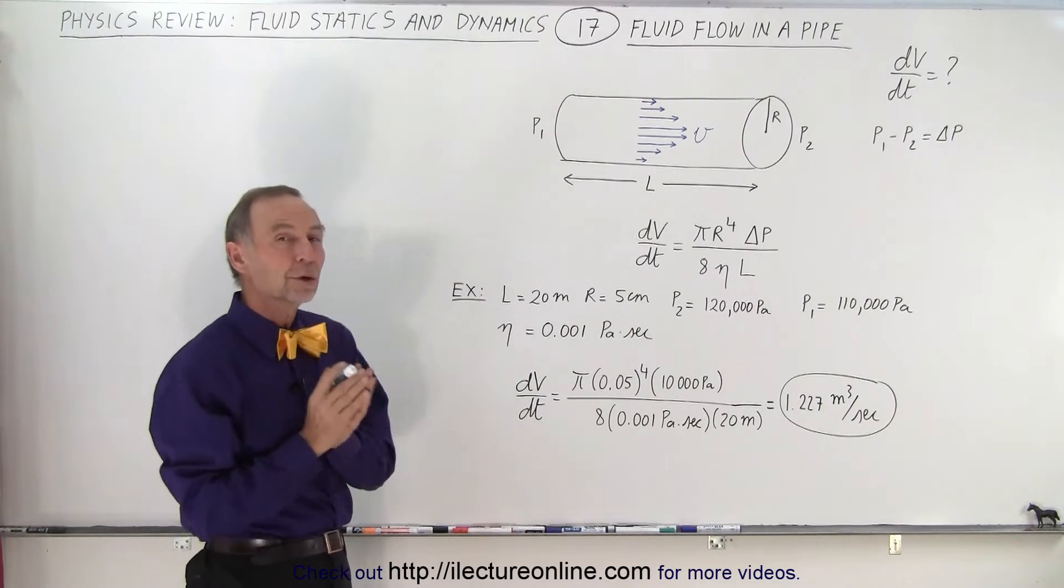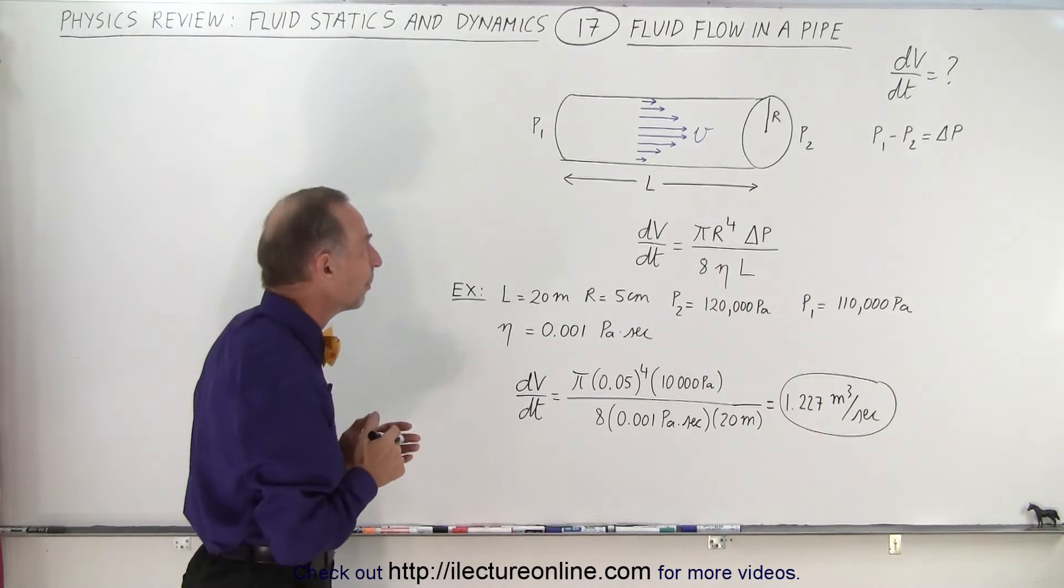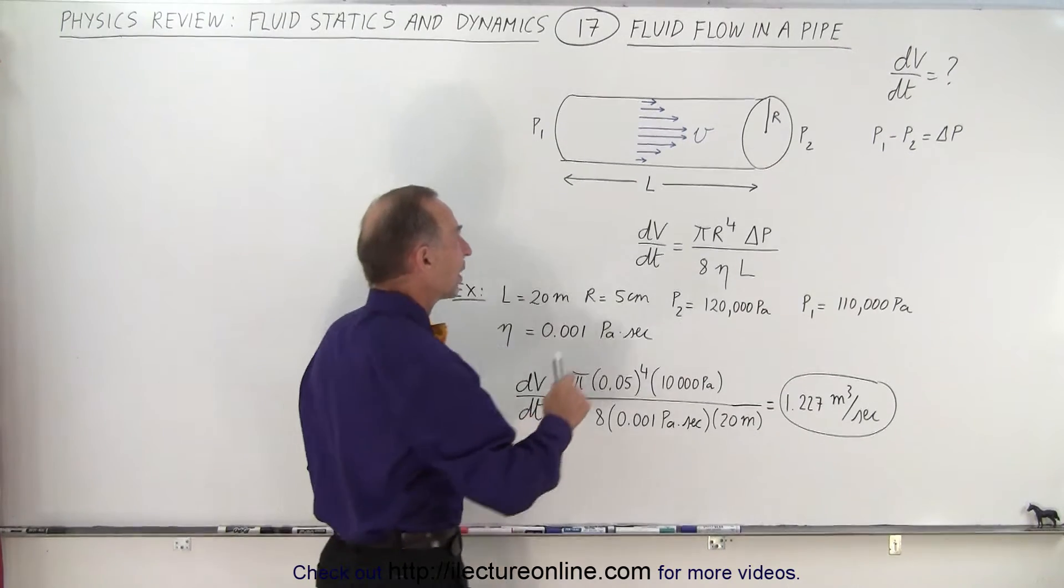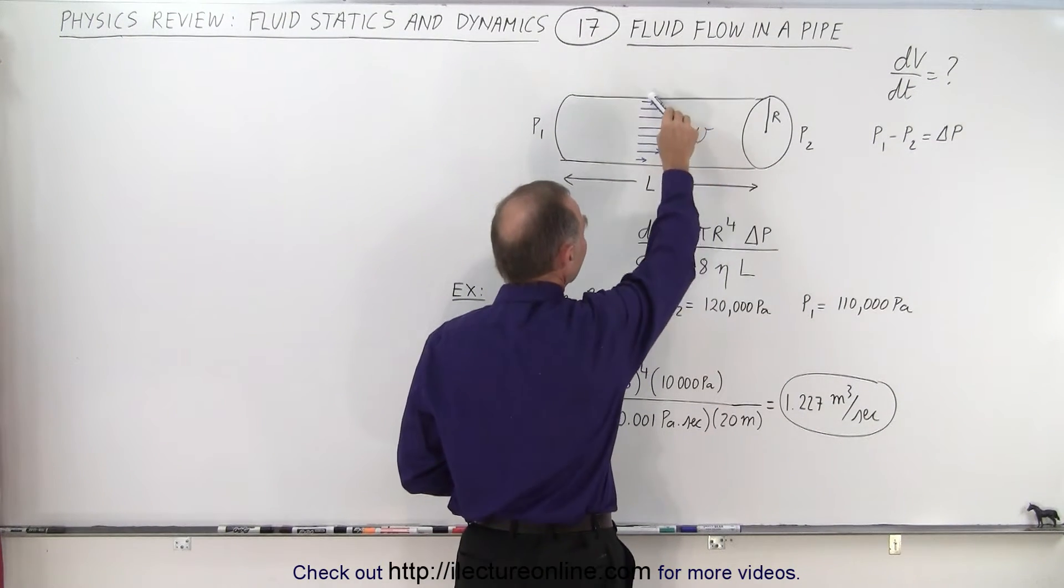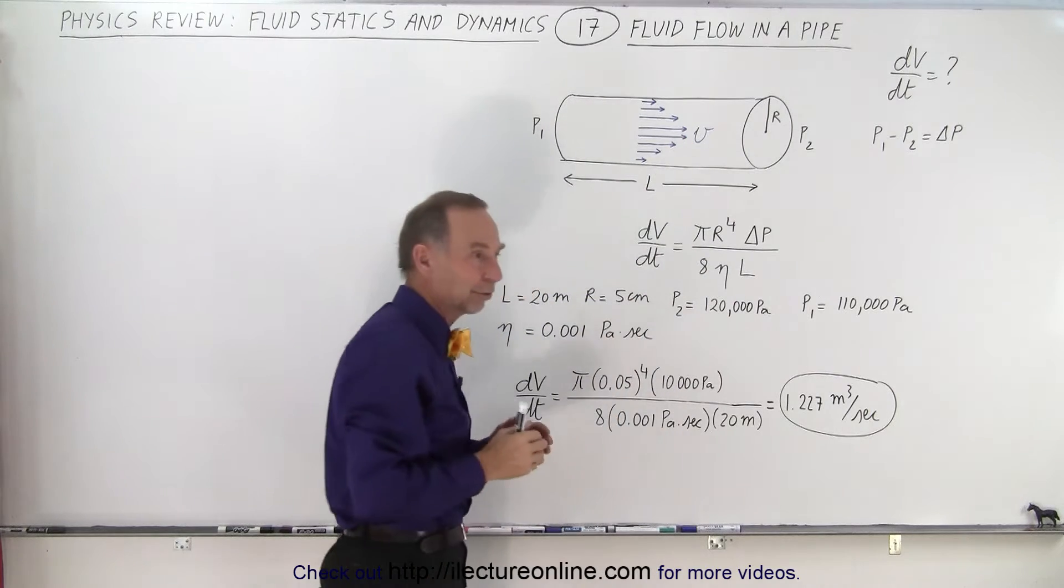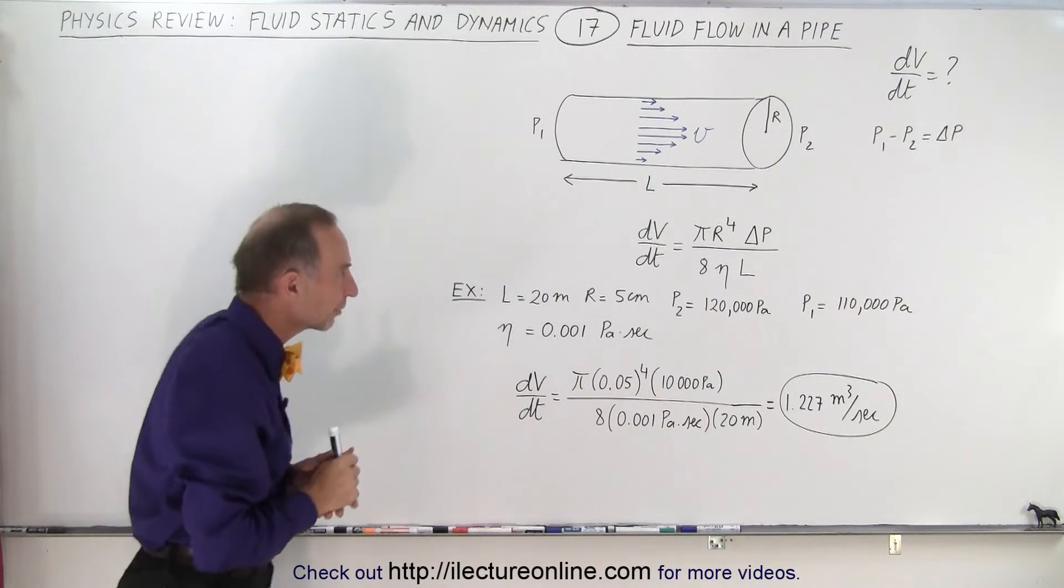Notice that this time we're going to include the viscosity inside the pipe, and so that means that the velocity of the fluid at the center of the pipe is much greater than the fluid towards the side, and that's of course due to the viscosity of the fluid.